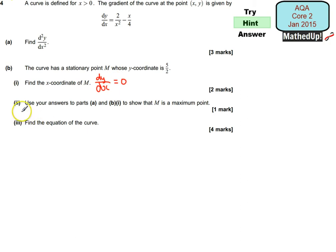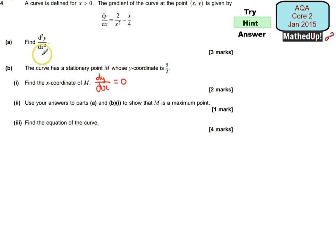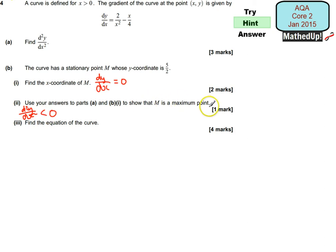For part B(ii), it says use your answer in part A to show that M is a maximum point. We're looking for when the second differential is negative, and that will tell us that M is a maximum point. So we want to show that our second derivative is less than zero, and if that is the case then that means we have got a maximum point.